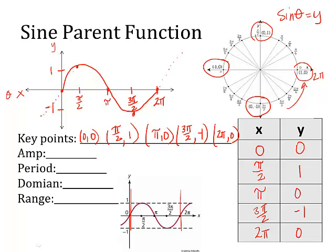Amplitude is the distance from the midline. At this point, our x-axis is my midline. It's the distance the graph goes up and the distance it goes down — it will be the same. So it's only going one unit up, from zero to one. The period: it takes two pi for this cycle to complete — go up and go down — and then it starts repeating itself.